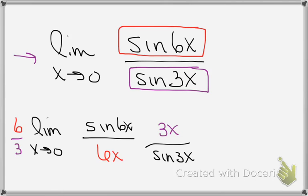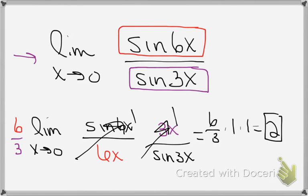Because now I know from theorem that this is 1, when I take the limit as x goes to 0, as is this. So I have 6 thirds times 1 times 1, which is just 2. So this limit is 2.